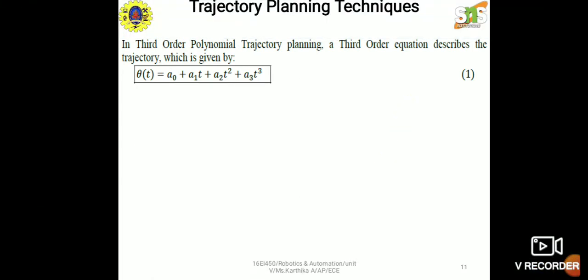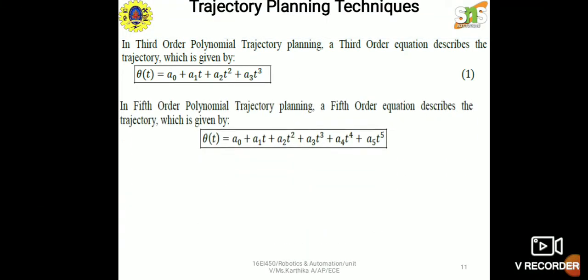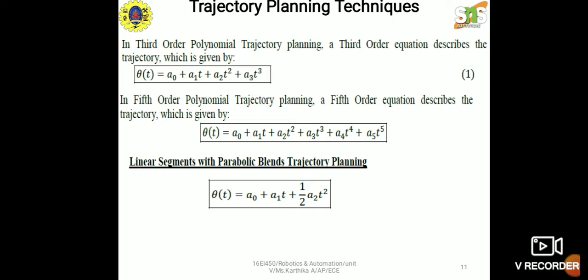Third order polynomial is used for third order trajectory planning, and fifth order polynomial is used for fifth order trajectory planning. For linear segments with parabolic blends, the trajectory is: θ(t) = A₀ + A₁t + ½A₂t². For higher order polynomial trajectory planning, θ(t) = A₀ + A₁t + A₂t² + … + Aₙ₋₁tⁿ⁻¹ + Aₙtⁿ, representing nth order polynomial trajectory planning.